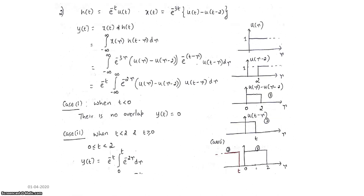The second problem discusses the case where one signal is finite and the other is infinite. Here h(t) equals e to the power minus t times u(t), and x(t) equals e to the power minus 3t times (u(t) minus u(t minus 2)).